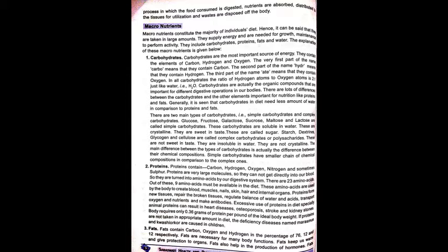Proteins contain carbon, hydrogen, oxygen, nitrogen, and sometimes sulfur. Proteins are very large molecules so they cannot enter the blood directly; they are broken down into amino acids via the digestive system. There are 23 amino acids, of which 9 must be available in the diet. These amino acids are used by the body to create muscles, bones, nails, skin, hair, and internal organs.